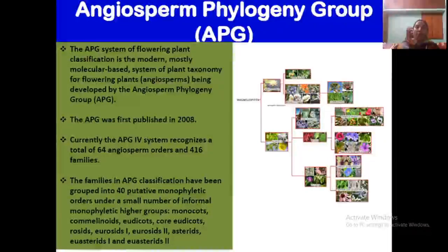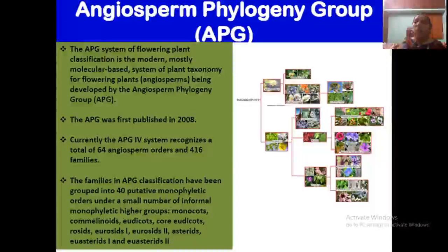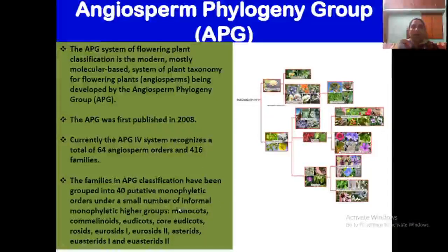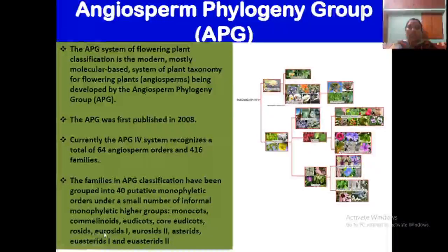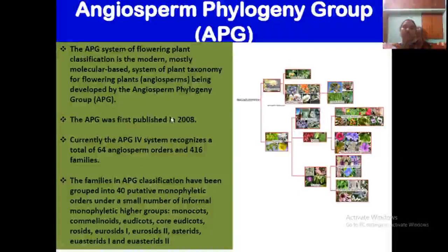The APG system was first published in 1998 and is very recent. APG-4 is the latest version, recognizing 64 angiosperm orders and 416 families. Families are grouped into monophyletic orders, which include groups such as monocots, eudicots, commelinoids, core eudicots, rosids, eurosids I and II, asterids, euasterids I and II. Just remember these groups — this information is mainly for brief questions.